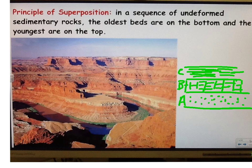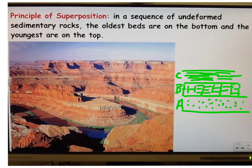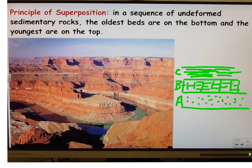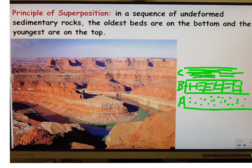The first one is the principle of superposition. This is probably one of the easiest ideas to remember. When we look at layers of rocks — and in this picture, this is a picture of the Grand Canyon — we see different layers of rocks here, and that's kind of what I have in this diagram right here.